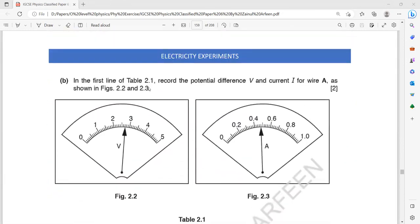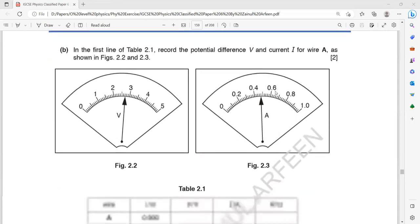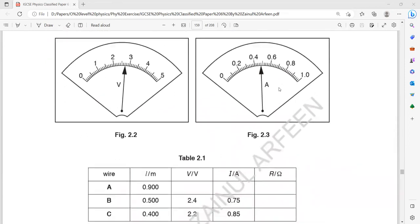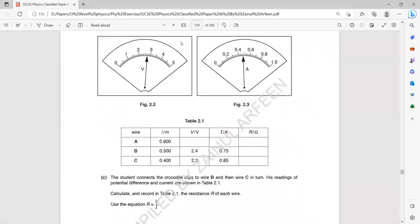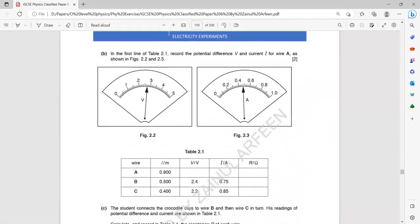In the first line of table 2.1, record the potential and the current. So what is the voltage and the current reading? How much is the voltage and current? So it is 2.7. Yeah, that's right. And what is the current reading? The voltage is 2.7, what about the current?